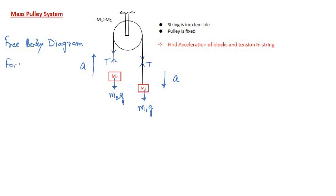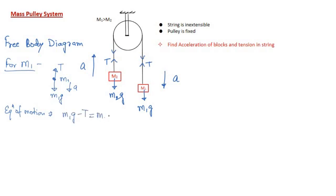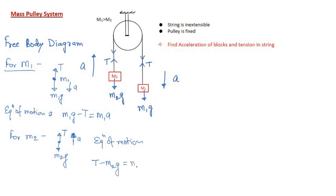For block m1: the gravitational force m1·g acts downward, tension T acts upward, and the block accelerates downward. The equation of motion is: m1·g − T = m1·a. For block m2: the gravitational force m2·g acts downward, tension T acts upward, and the block moves and accelerates upward. The equation of motion is: T − m2·g = m2·a.